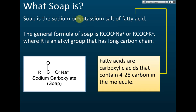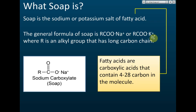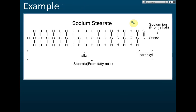That is what a salt is. So why do we call soap a salt? It is because a soap molecule is also an ionic compound. An ionic compound contains positive and negative ions. In soap, the negative ions come from the fatty acid, which is an acid, and the positive ions come from an alkali — sodium hydroxide or potassium hydroxide. Therefore, soap is a salt.